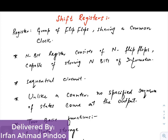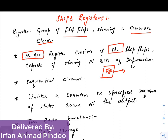Welcome back students. We have finished our lecture series based on counters, and now the next topic we will be discussing is shift registers. A register is nothing but a group of flip-flops that share a common clock. Since each flip-flop stores one bit of data, an n-bit register is composed of n flip-flops and can store n bits of information.